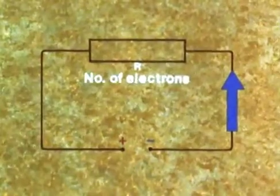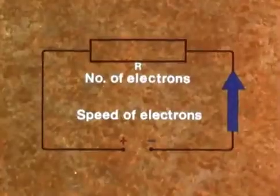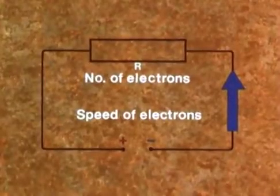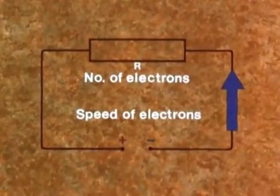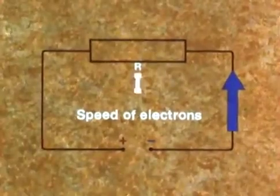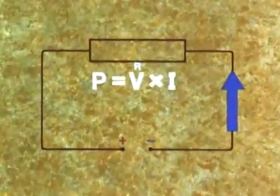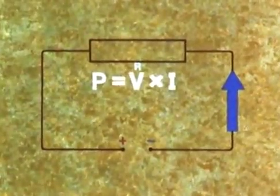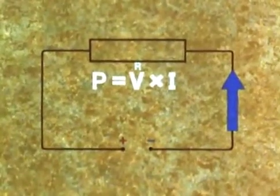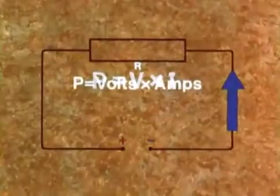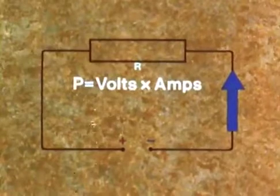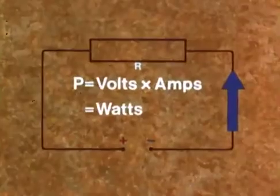In an electric circuit, the power, the rate at which work is done, depends on the number of electrons moved and the speed at which they travel. But the number of electrons moved is the current flowing in amps I, and the speed at which they travel depends on the voltage V driving them around. So P, the power absorbed in the circuit, is given by V times I, volts times amps, and is measured in watts W.